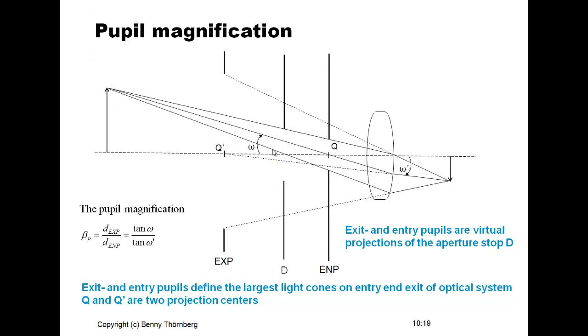The exit and entry pupils are virtual projections of the aperture stop D. Because of the simplicity of the pinhole camera model, it is very often used as an approximation for projection in a Gaussian lens system. Within this approximation, you often assume that the distance between the tiny pinhole and the image position on the focal plane is equal to the focal length of the Gaussian optics — though this introduces some error.